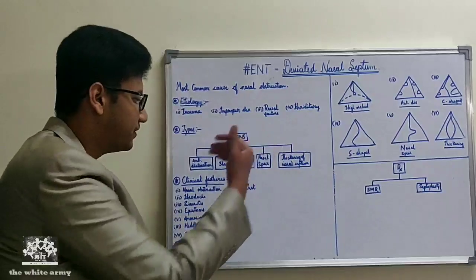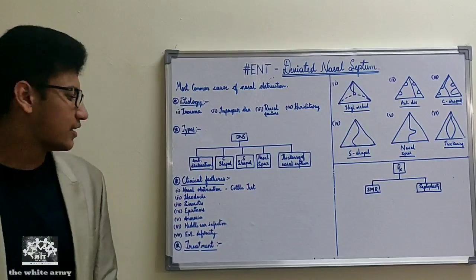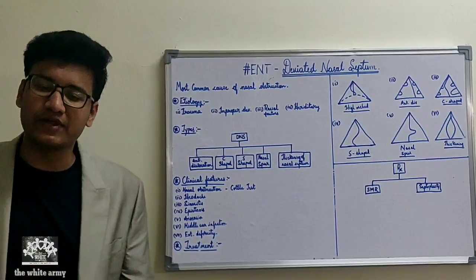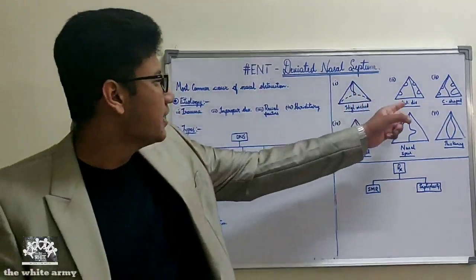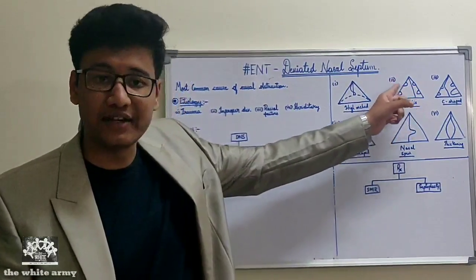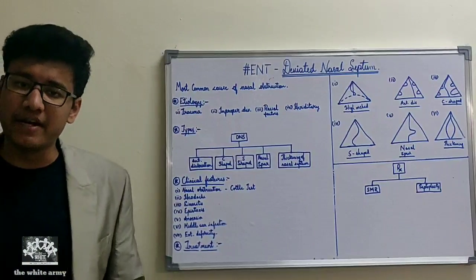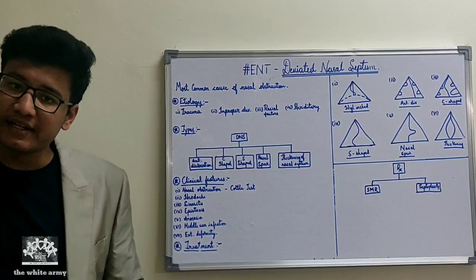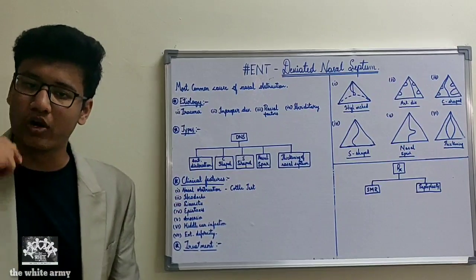Anterior dislocation is dislocation of the nasal septum anteriorly into one of the nares. We can appreciate in the diagram that the nasal septum has deviated from its original position into one side. During clinical examination, by hyperextension of the neck and visualizing the nasal vestibule, we can confirm this anterior dislocation — we can see the septum displaced into one of the nares.